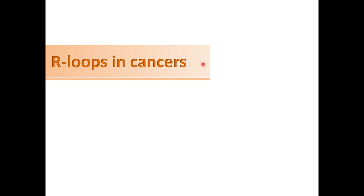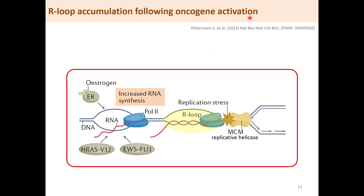R-loops are prominently involved in cancers. For example, R-loops can accumulate in cancer by oncogene activation. Oncogenes such as EWS-FLI1, HRAS V12, and estrogen receptor (ER) can increase local DNA synthesis and greatly promote R-loop formation. These R-loops can cause DNA replication stress, DNA damage, and genomic instability in cancer.